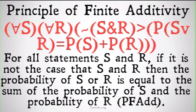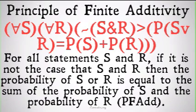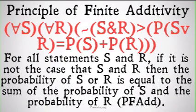However, the probability of S — this one coin flipping heads — plus the probability of R — this other coin flipping heads — is actually going to be one. So if it's possible that S and R can both happen, then in fact this statement is not going to be true.